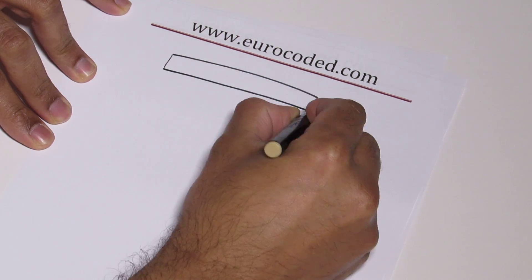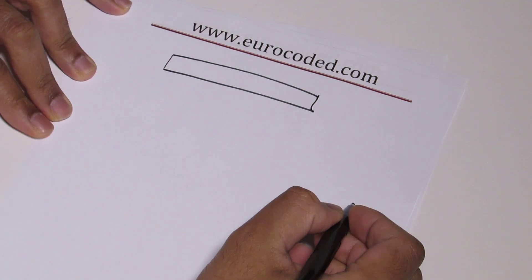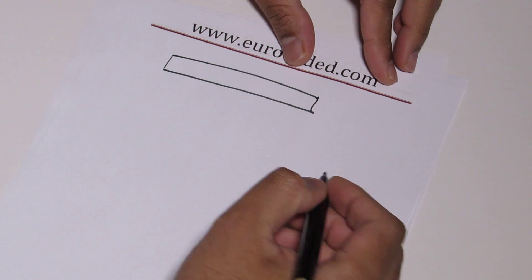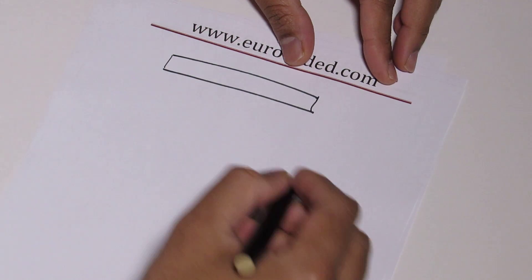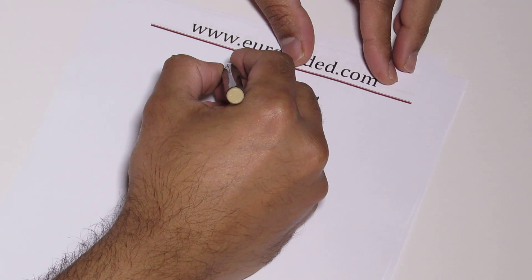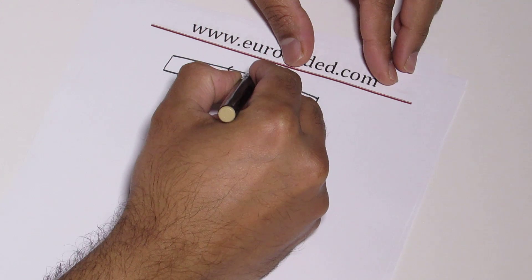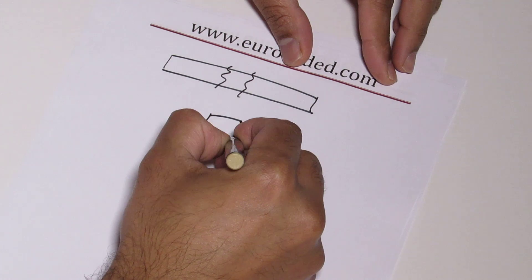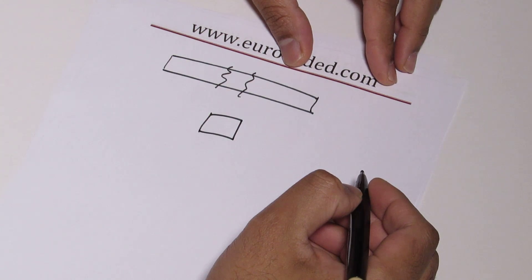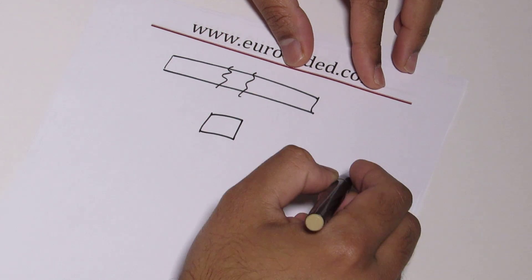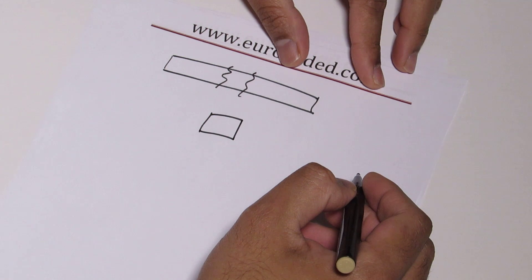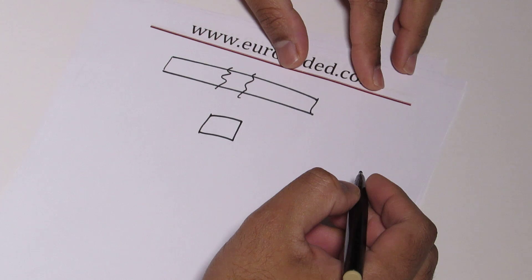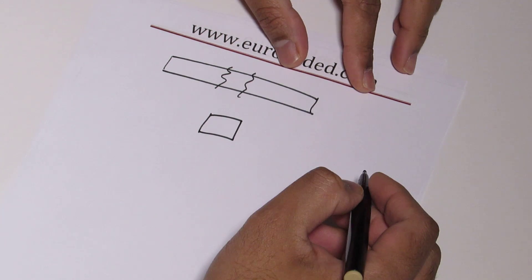One important thing is to use the same sign convention, and I'm going to show you the typical sign convention out there. So if you take a cut, if you take a small section like this, you need to use the same sign convention for bending moment, tensile or compressive forces, and shear forces and torque as well.